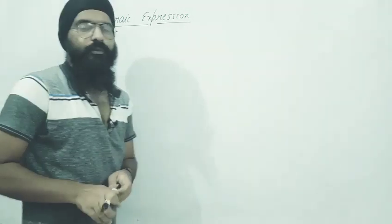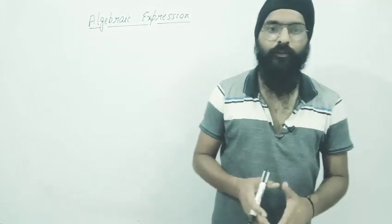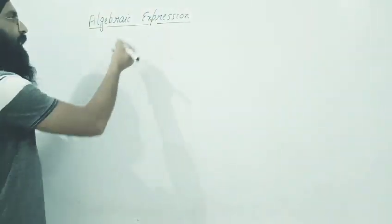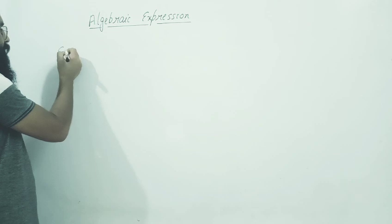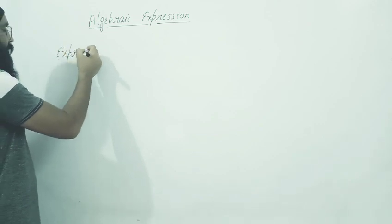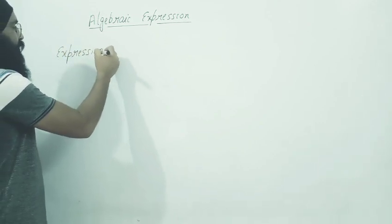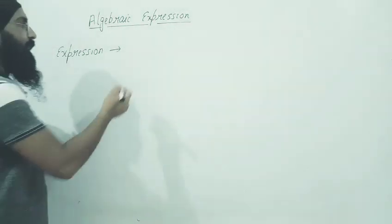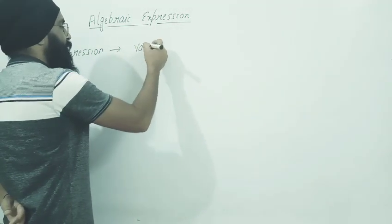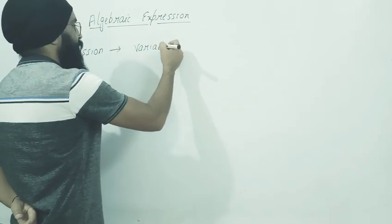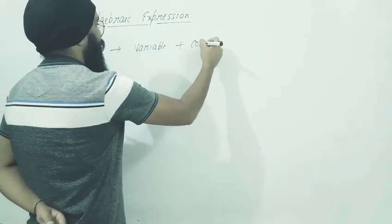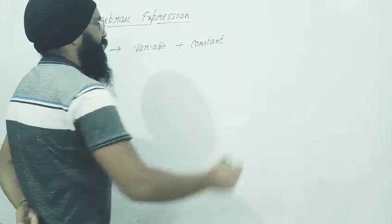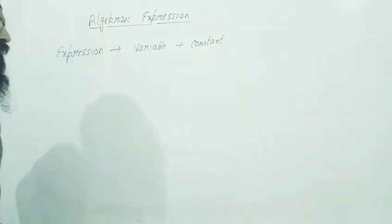First of all, we will come to know about some terms. We will study the definitions. So the first definition is expression. An Algebraic Expression is made up of two things that are combined - that is variable and constant.